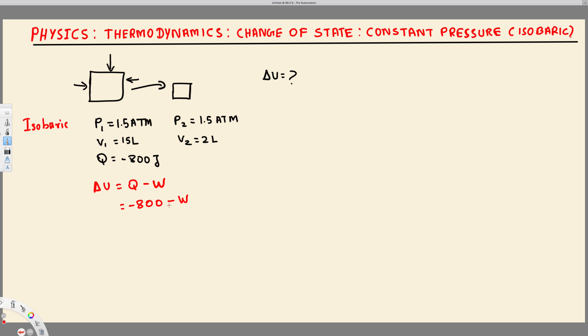To calculate that one, in an isobaric process, work is equal to P delta V, right? So here we have the P that is 1.5 atm times delta V, which is going to be the change in volume. That's going to be 2 liter final minus initial, 2 liter minus 15.